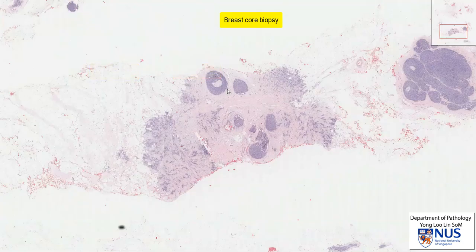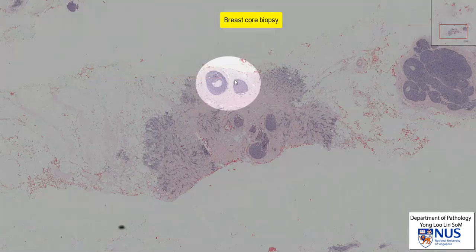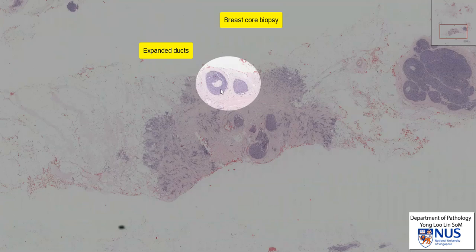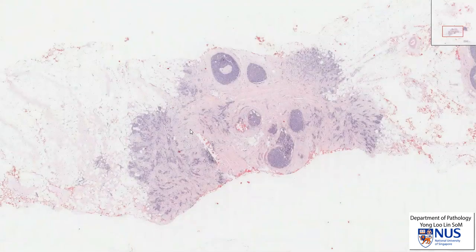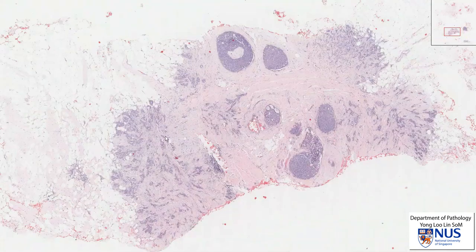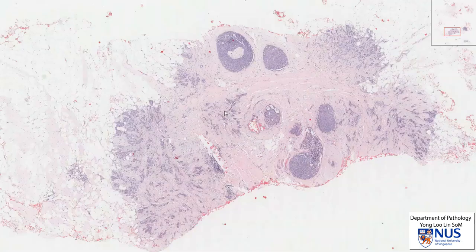At the same time, we can see some very large rounded structures. These are pre-existing ducts, which are abnormal and are expanded by abnormal cells. If we zoom in a little bit, we can see some irregular nests of cells within the fibrous stroma.